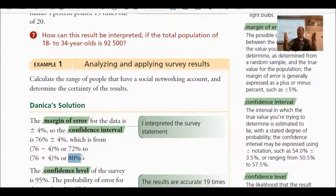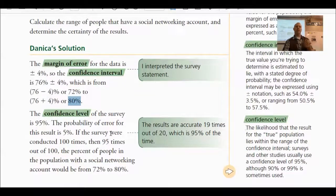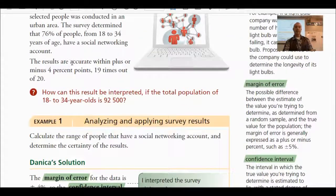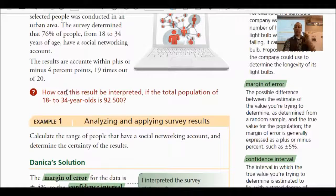Does that make sense? Those two things — margin of error and confidence interval — are pretty straightforward. The confidence level is a bit tricky. Why do they have to say the results are accurate to plus or minus four percentage points 19 times out of 20? Why can't they just say plus or minus 4%? So there's an extra level of information here.